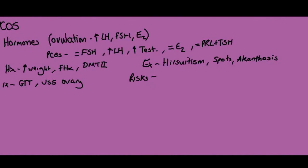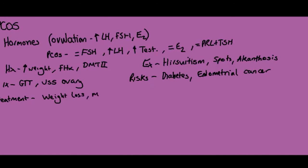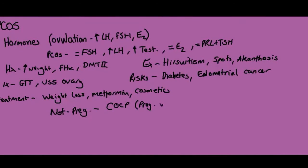As weight increases, production of sex hormone binding globulin decreases — this acts like a sponge for androgens — meaning more testosterone is bioavailable, causing androgenic signs. On examination you may find acne, hirsutism due to increased androgens, and acanthosis nigricans. Key investigations include a glucose tolerance test to assess diabetes and blood sugars, and an ultrasound scan of the ovaries to look for cysts. Risks include diabetes, and PCOS is associated with endometrial hyperplasia which, if ongoing, can cause cancer.